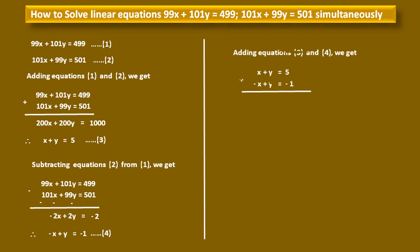Adding equations 3 and 4: (x + y) + (−x + y) = 5 + (−1). The x terms eliminate each other, leaving 2y = 4. Dividing both sides by 2, we get y = 2. This is the value of variable y.